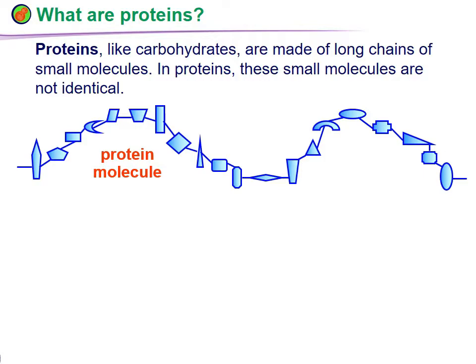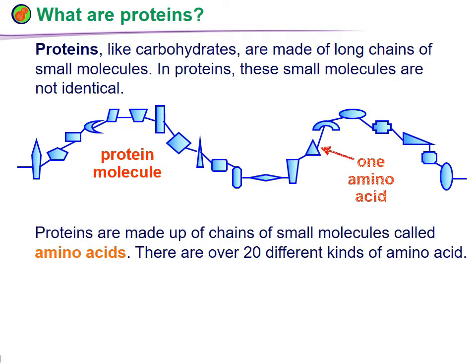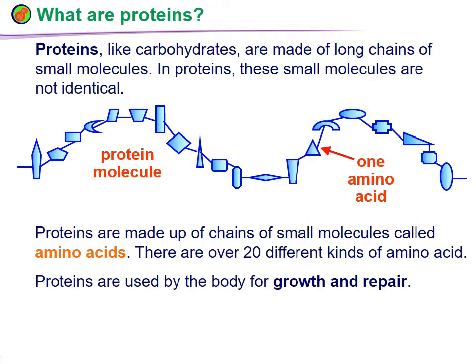What are proteins? Proteins, like carbohydrates, are made up of long chains of small molecules. However, in proteins these molecules are not identical — they are different from each other. Proteins are made up of chains of small molecules called amino acids. There are 20 different kinds of amino acids.